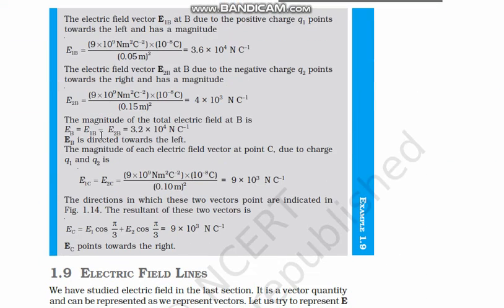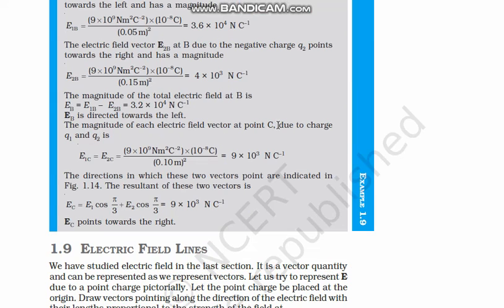So let us calculate this electric field EC. For EC, the magnitude of each electric field at point C due to charge Q1 and Q2. Since both are equidistance, 0.1 meter, only thing is that direction is quite different. But the magnitude will remain same. So this is 1 on 4 pi epsilon naught. This is charge 10 to power minus 8 coulomb. One is positive and other one is negative. But the magnitude will remain same. And the distance is 0.10 meter square.